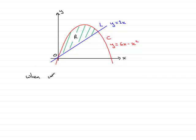So I'm going to start off by saying when y equals 0, then we would have 6x minus x squared, which is the equation for C, equaling 0.